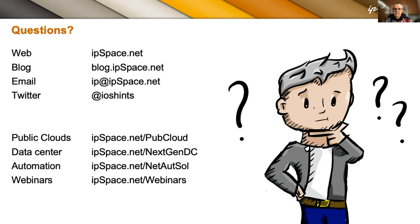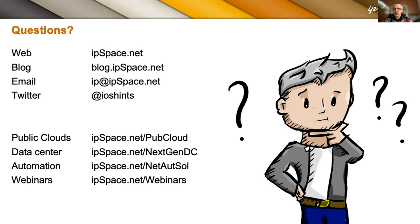On bring-your-own-address: at least in AWS, and similarly in Azure, you first register your prefix with the provider — for example, 'I have this /48, I want to use it in your public cloud.' You do this per region because every region advertises its own address space. You must prove it's your prefix, which means having an ROA and so on. There are safeguards in place to ensure it really is your prefix.